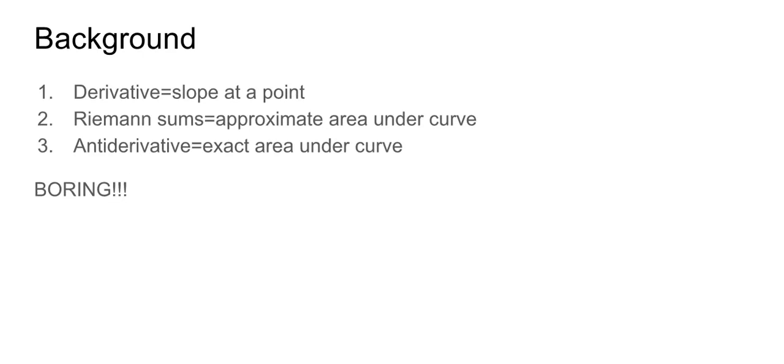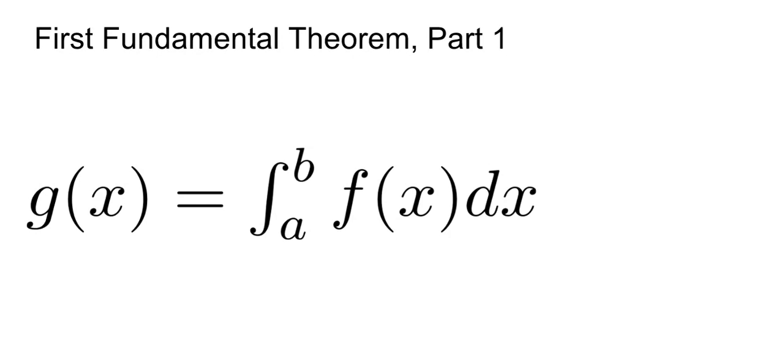The first fundamental theorem of calculus, or FTC1, comes in two parts: FTC1 part 1 and FTC1 part 2. FTC1 part 1 is as follows: g(x) is equal to the integral from a to b of f(x) dx. What this is saying is that if f is continuous on the interval from a to b, then we can define a function g(x) such that g(x) is the area under f(x) with respect to the x-axis from a to b.